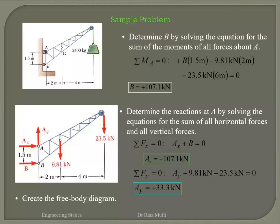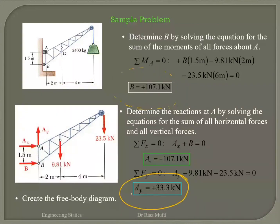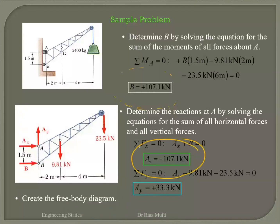Looking at the results: the B force is positive, which means this direction assumption was right. Looking at Ay — positive answer, so this assumption is also right. Looking at Ax — it's negative, so this assumption was wrong, meaning the reactive force is actually acting in the opposite direction. It doesn't mean you have to change anything on your diagram; your answer is telling you that.